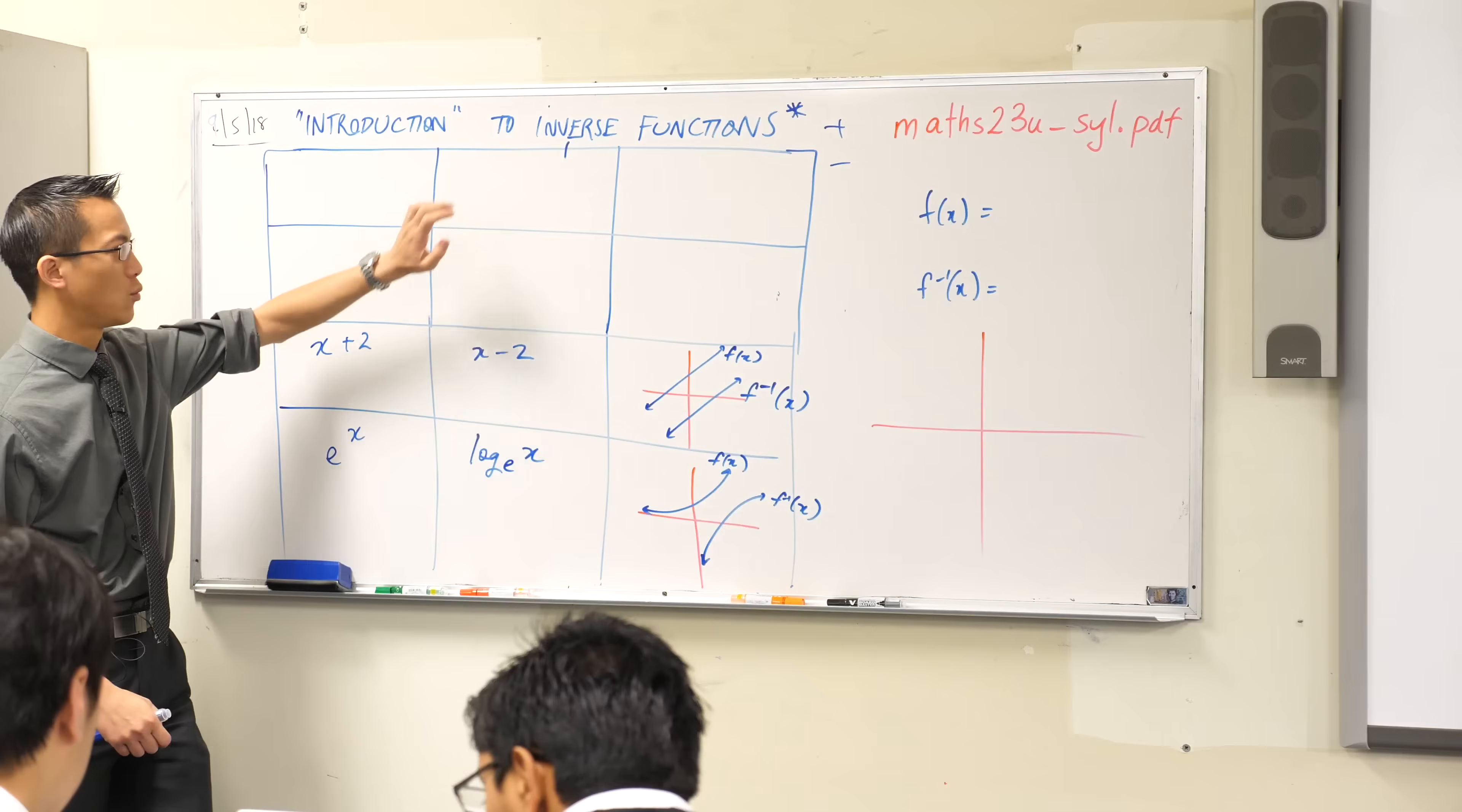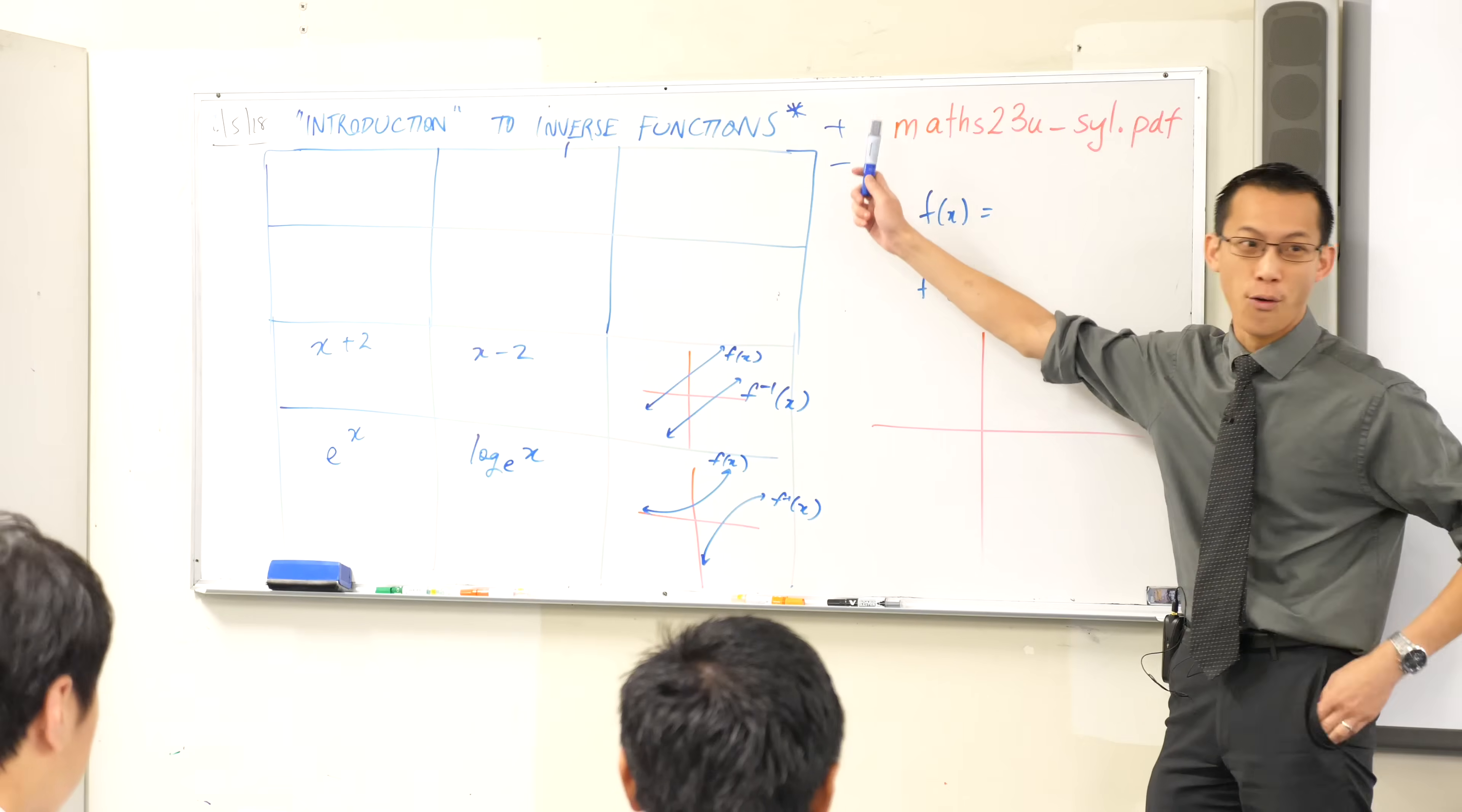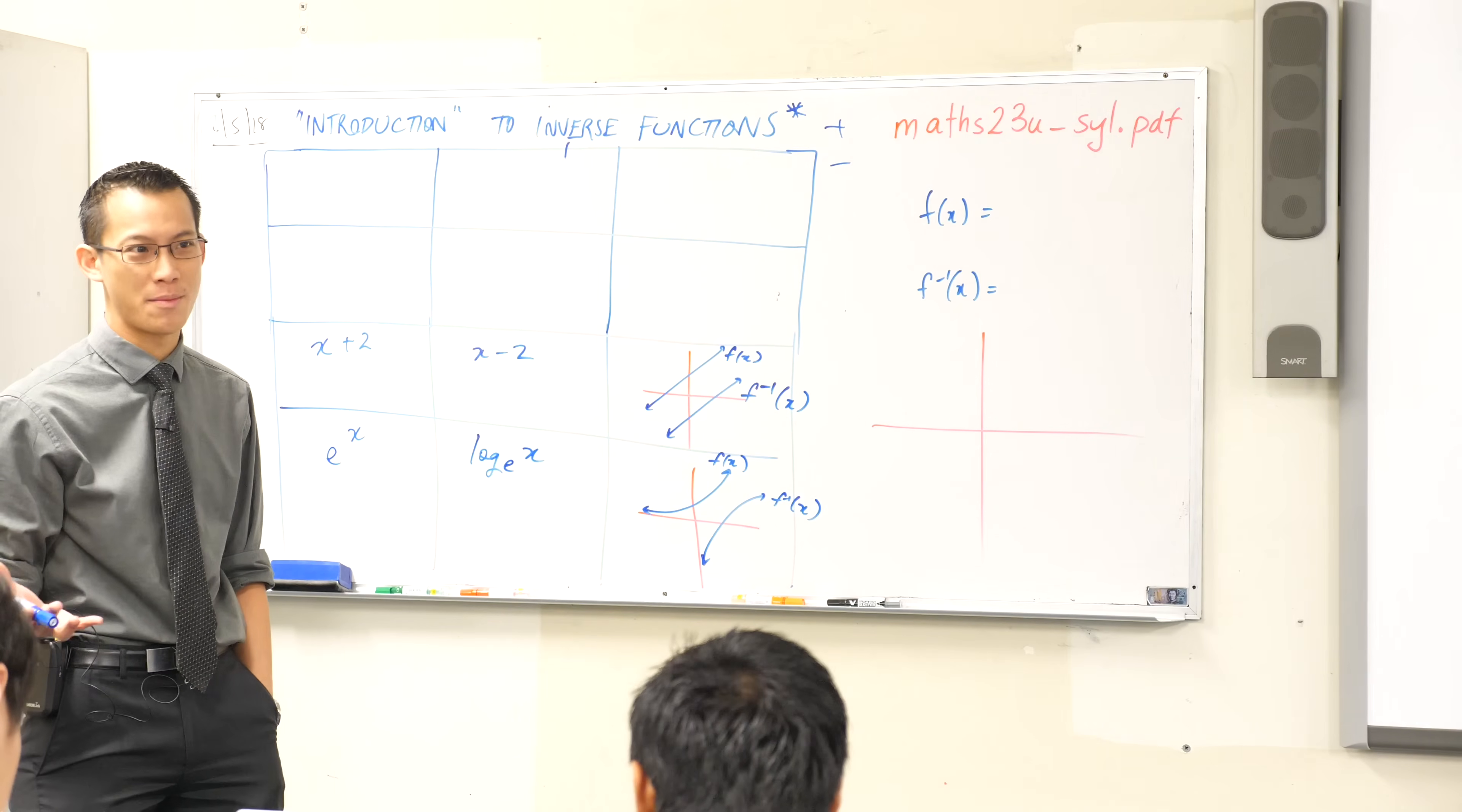I've actually got one, two, three more. We'll see how we go for space that I want to talk about. Did anyone think of the other really simple one, the other one that you've been doing for like 10 years plus now, simple operation that you know it's inverse? Apart from plus and minus, what are the other two operations you learn about really quickly?